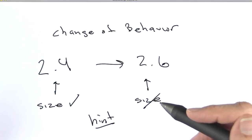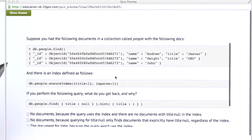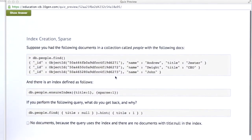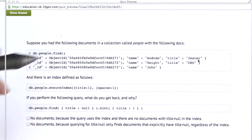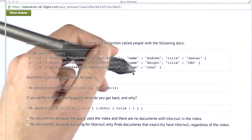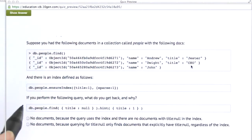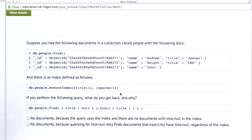So thinking about MongoDB 2.6, let's do a quiz. Let's say that we have the following documents in a collection called people. You can see there are three documents here. The first one has a name of Andrew, title of Jester. The second one has a name of Dwight, title of CEO. The third one is the name of John with no title. There's an index on this collection on the title key, and it is sparse.